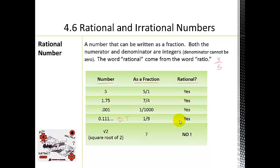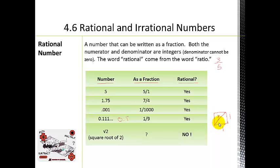A long time ago, people came across squares with sides of one and one, and they couldn't figure out what the diagonal was. We'll learn about this later with the Pythagorean theorem. With side lengths of one and one, the diagonal turned out to be the square root of two. It didn't meet the criteria of a rational number, so they had to call it something else — if it's not rational, it's irrational.